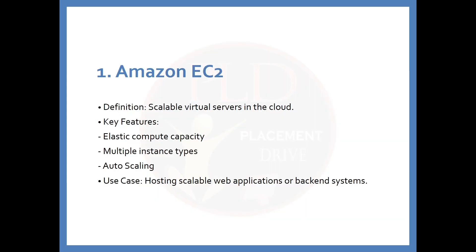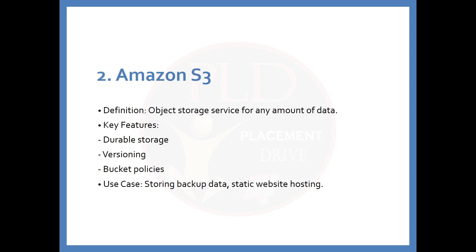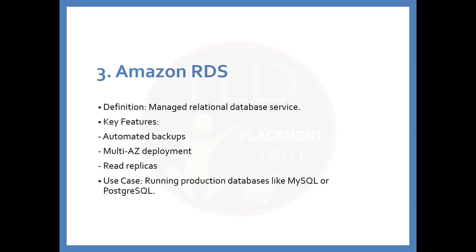The first service is Amazon EC2. The definition is: this is a scalable virtual server in the cloud. Key features include elastic compute capacity, multiple instance types, and auto scaling. The use case is to host a scalable web application or back-end system. The second service is Amazon S3, defined as an object storage service for any amount of data. Key features include durable storage, versioning, and bucket policies. The use case is storing backup data and static website hosting.